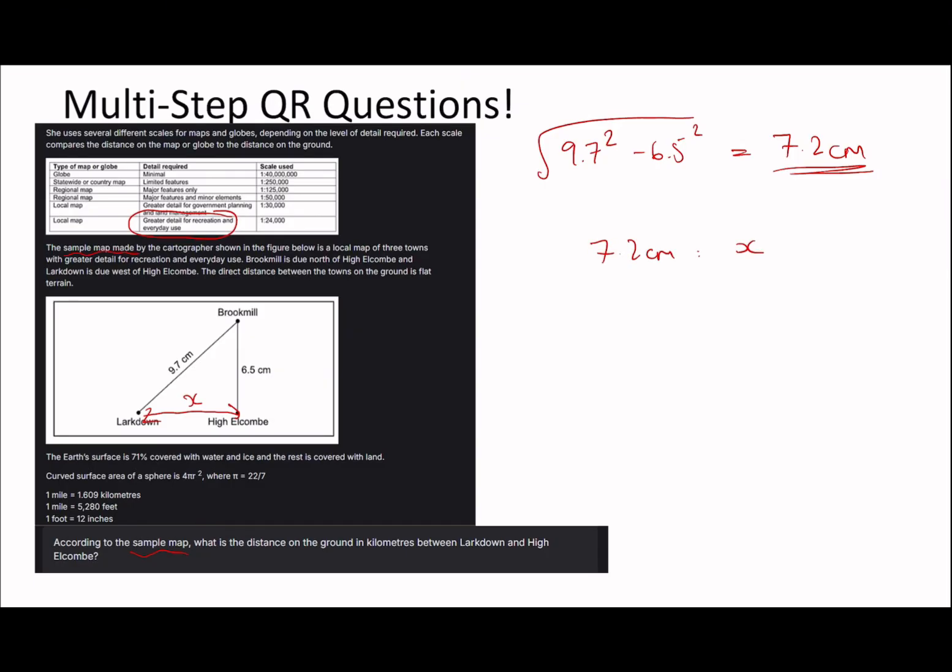So 7.2 centimeters goes to X. 1 is to 24,000. If you guys haven't seen some of my ratios or proportions video, I talk about maps in there and I'd really advise you to check it out. So the point with maps is the scales they give you mean that, so here 1 to 24,000 means one centimeter on the map represents 24,000 centimeters in real life. So if we've got 7.2 centimeters here, its equivalent distance in real life is just going to be 24,000 times 7.2, which is 172,800 centimeters, which when you divide by 100 you'll get 1728 meters. And if you divide that by 1000 you'll get 1.728 kilometers.